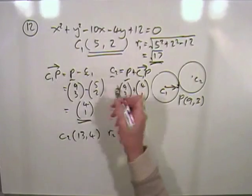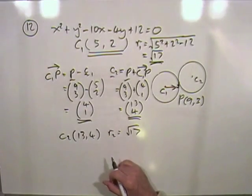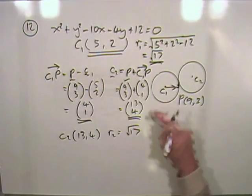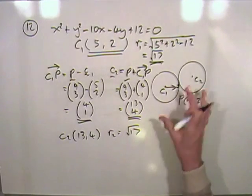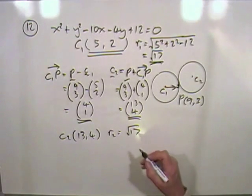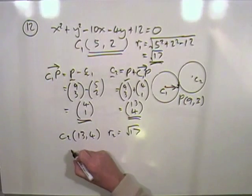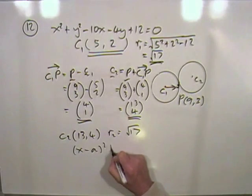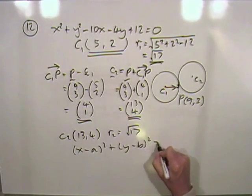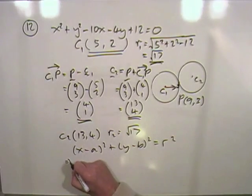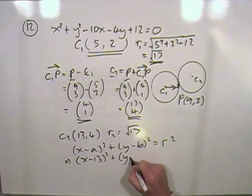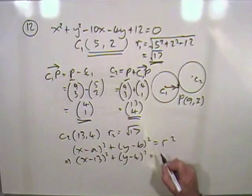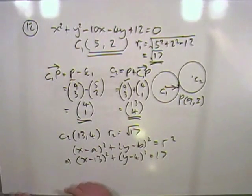Which means C2 is 13, 4, along with r2 being the same, which is root 17. Then you get the equation of the circle. I know it's quite lengthy, you probably wouldn't do that in the exam. But that'd be the formal way of doing the stepping stone business, the vector method, instead of using the midpoint formula in reverse. Then equation of the circle: x minus a squared, y minus b squared equals r squared. So that's x minus 13 squared plus y minus 4 squared equals 17.